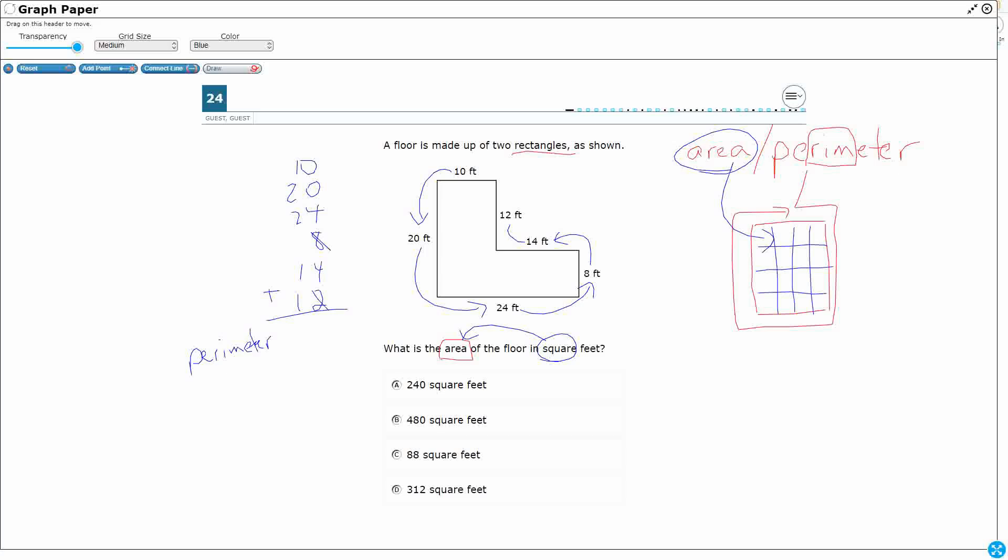So if we add this, 8 and 2 make 10, 14, 18, and then I've got 1, 2, 3, 4, 5, 6, 7, 8. So it's 88 feet.